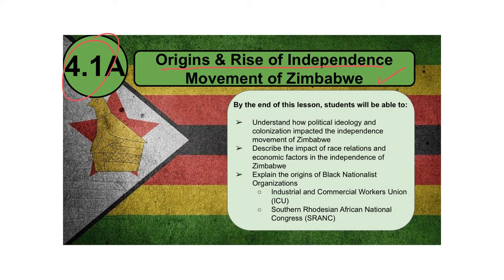By the end of today's lesson, you should be able to understand how political ideology and colonization impacted the independence movement of Zimbabwe; describe the impact of race relations and economic factors in the independence of Zimbabwe; and explain the origins of black nationalist organizations, for example the ICU and S-RANC, which is the Southern Rhodesian African National Congress.